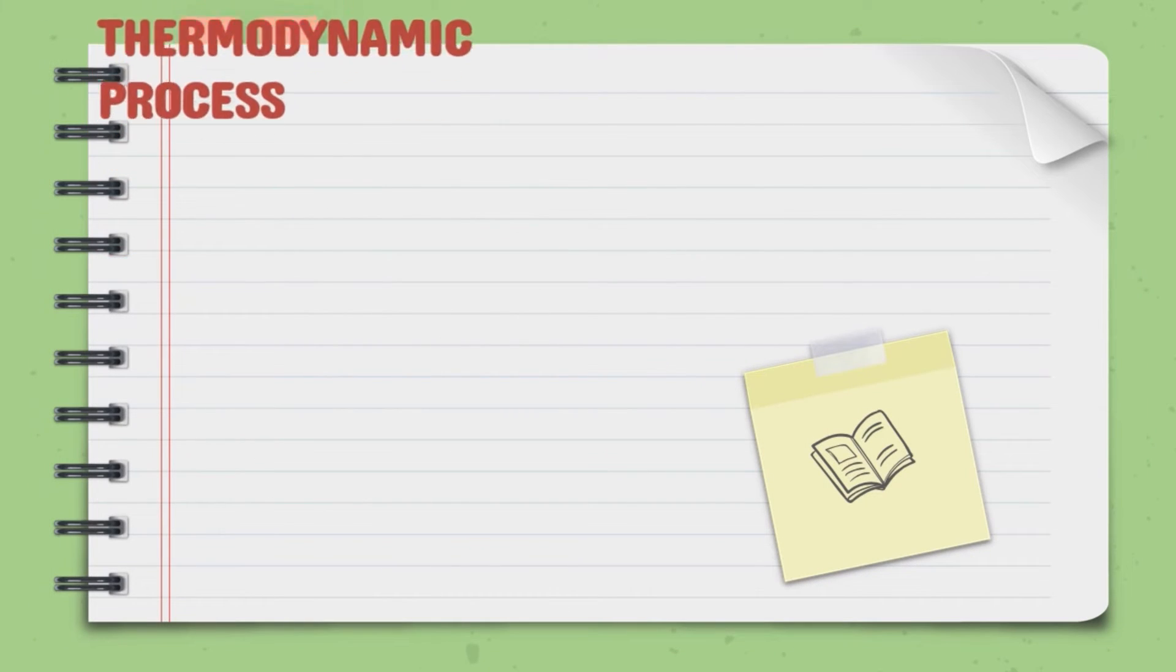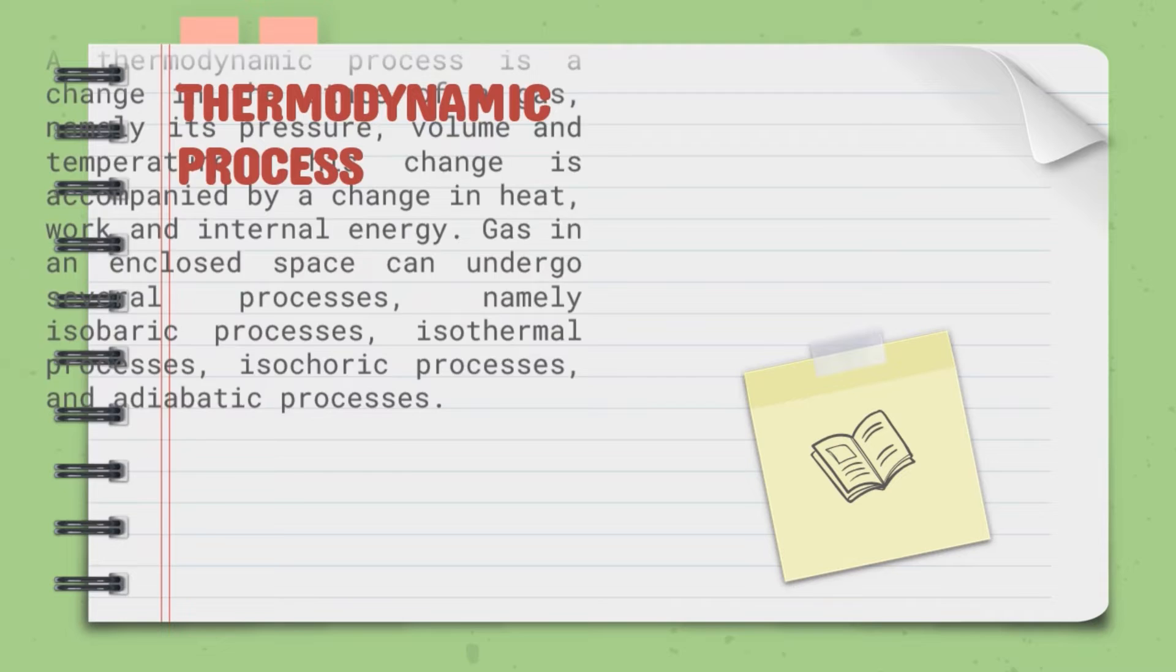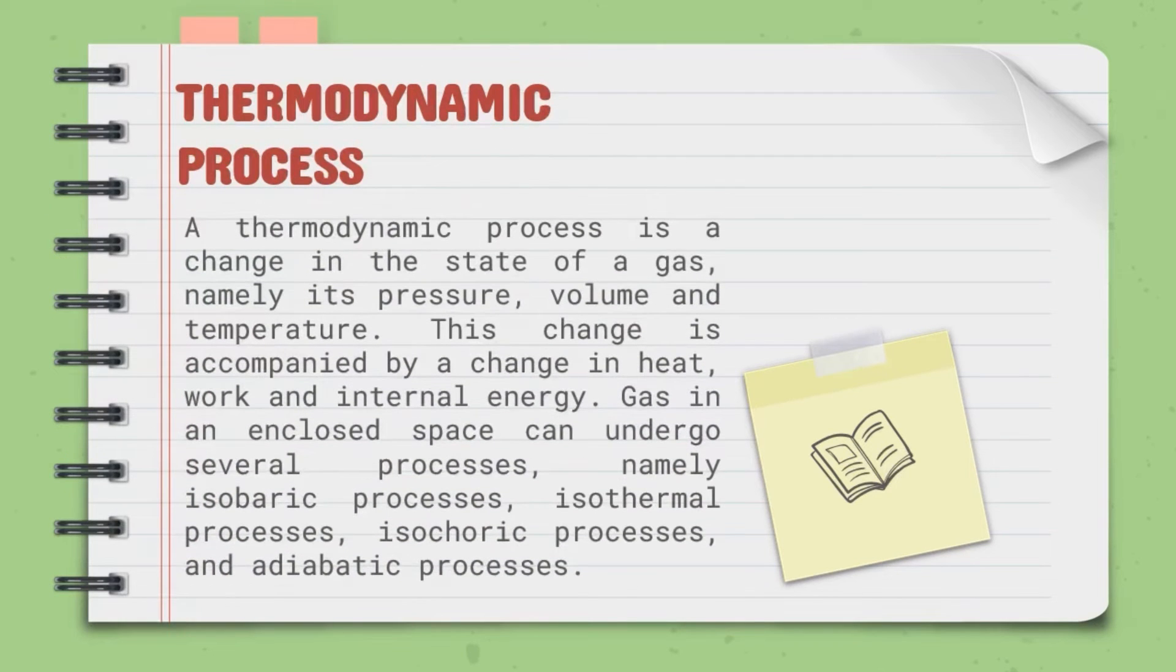Next is the thermodynamics process. A thermodynamic process is a change in the state of a gas, namely its pressure, volume, and temperature. This change is accompanied by a change in heat, work, and internal energy. Gas in an enclosed space can undergo several processes: isobaric processes, isothermal processes, isocoric processes, and adiabatic processes.